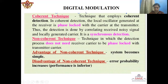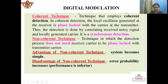In digital modulation, we have two types of methods: coherent technique and non-coherent technique. In coherent techniques, the local oscillator generated at the receiver is phase-locked with the carrier at the transmitter. Thus detection is done by correlating the received signal and the locally generated carrier. It is also called the synchronous detection method. In the non-coherent technique, the detection process does not need the receiver carrier to be phase-locked with the transmitted carrier. The advantage of non-coherent technique is that the receiver system becomes very simple, but the disadvantage is that error probability increases.